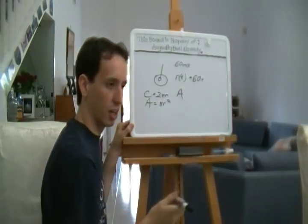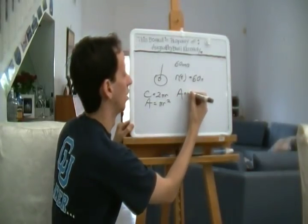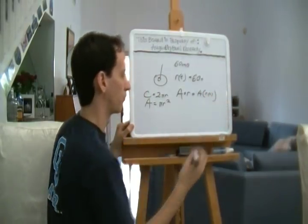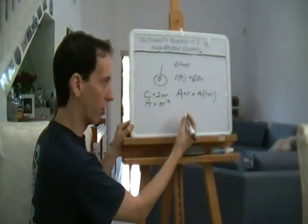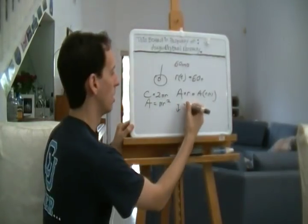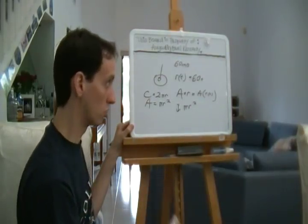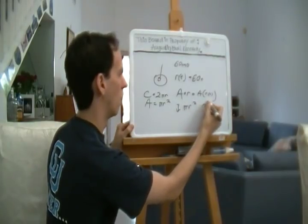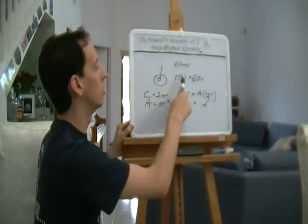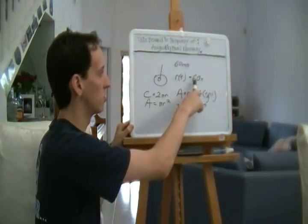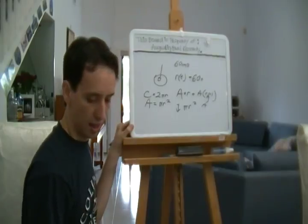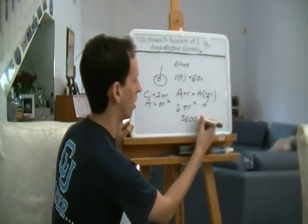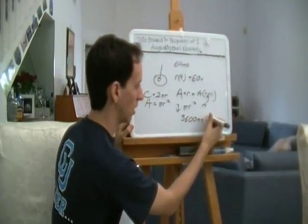Now what we're looking at here is the area of this circle, A of R, is really just the same as A of R of t. So what's area? Well, area, as we know, is pi r squared. So we're going to need to do A of R. Now what we know here is that the r squared is now going to be 60t squared. And that's going to give us our final answer of 3600 pi t squared.